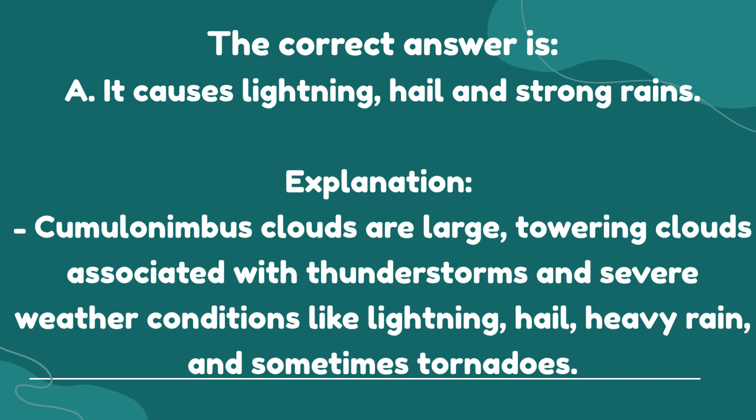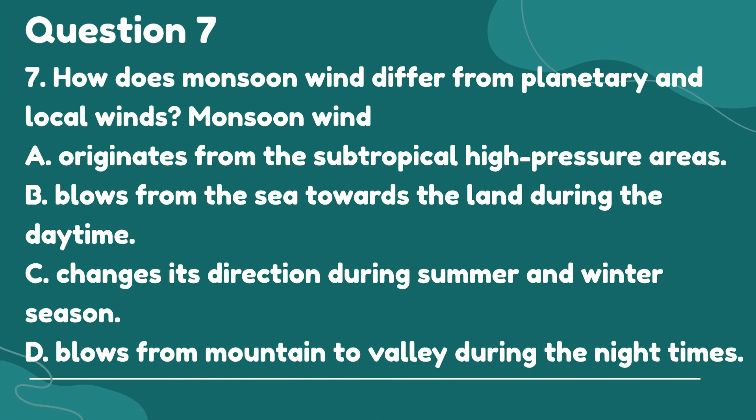The correct answer is A. It causes lightning, hail, and strong rains. Explanation: Cumulonimbus clouds are large, towering clouds associated with thunderstorms and severe weather conditions like lightning, hail, heavy rain, and sometimes tornadoes.